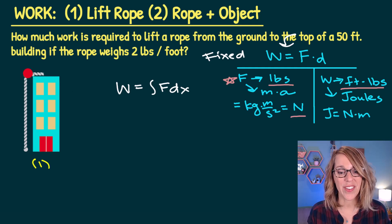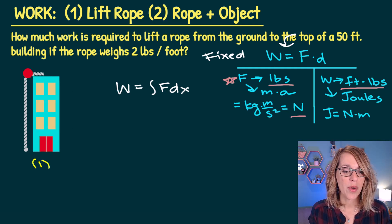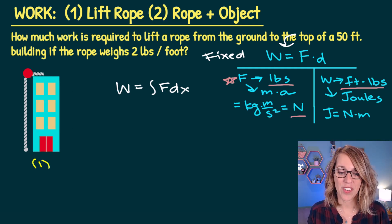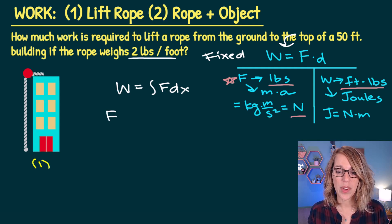Let's start by putting the force together for our rope. We really need force to be a unit of pounds, but what we are given, instead of just a weight, we are given this weight density, two pounds per foot.